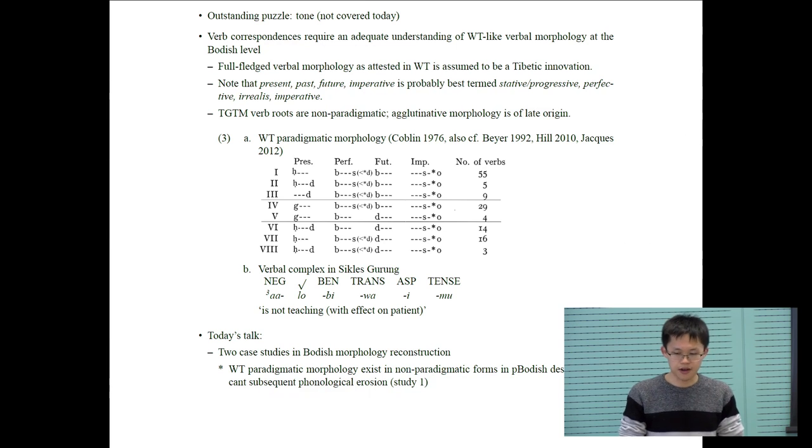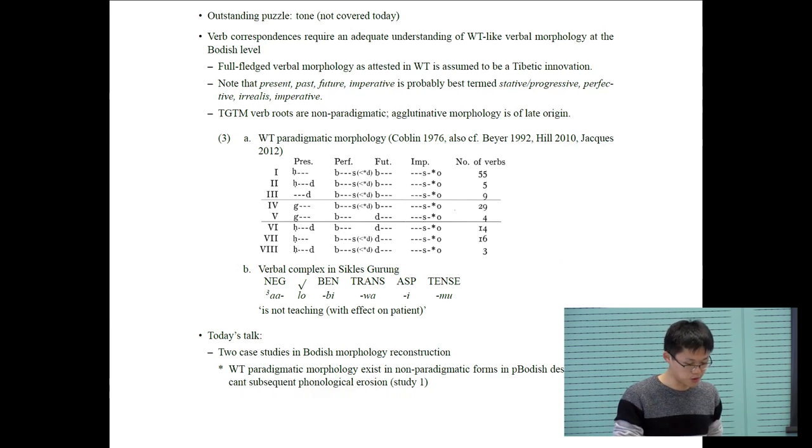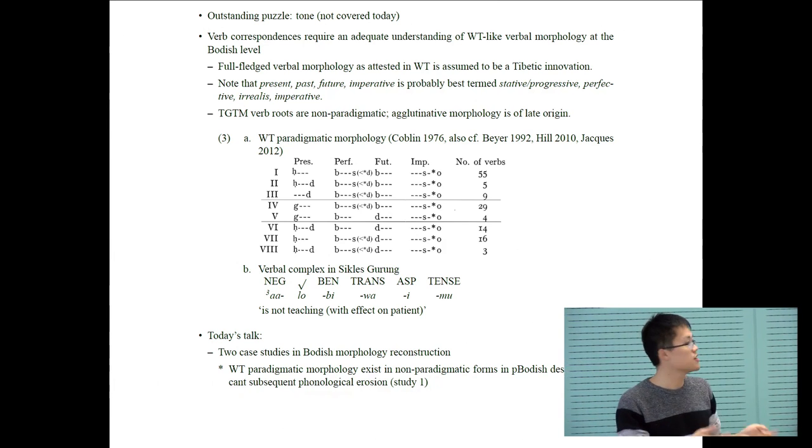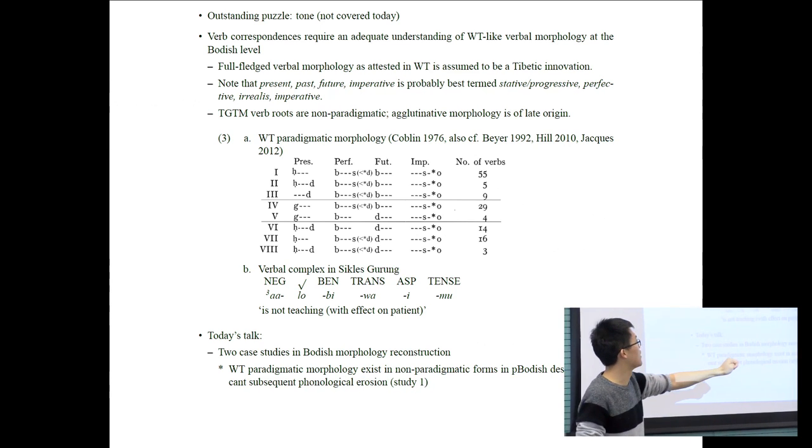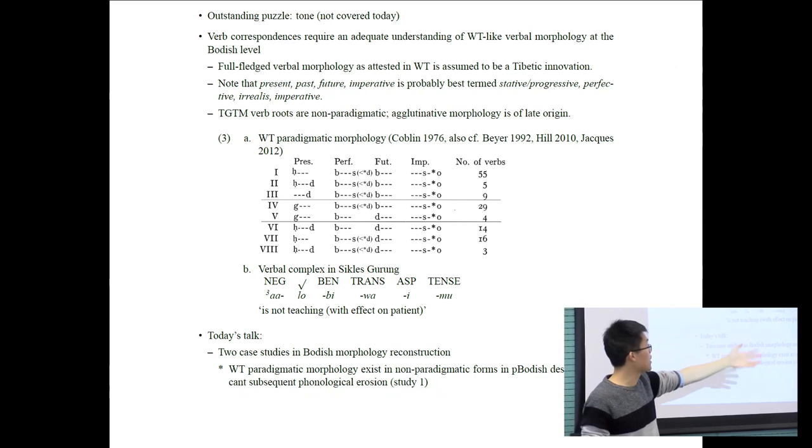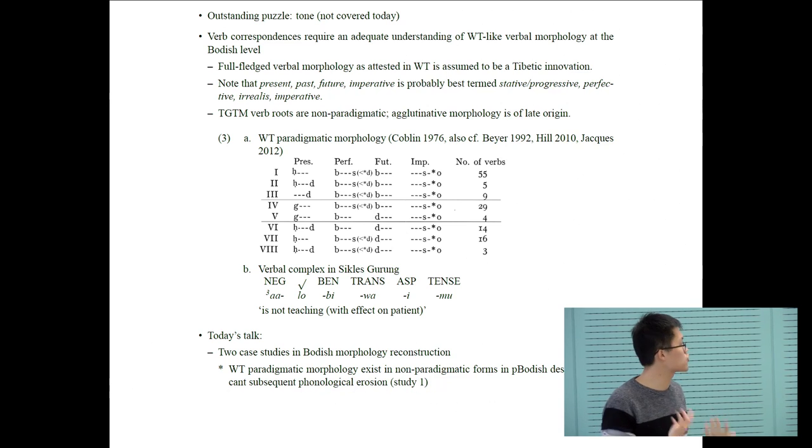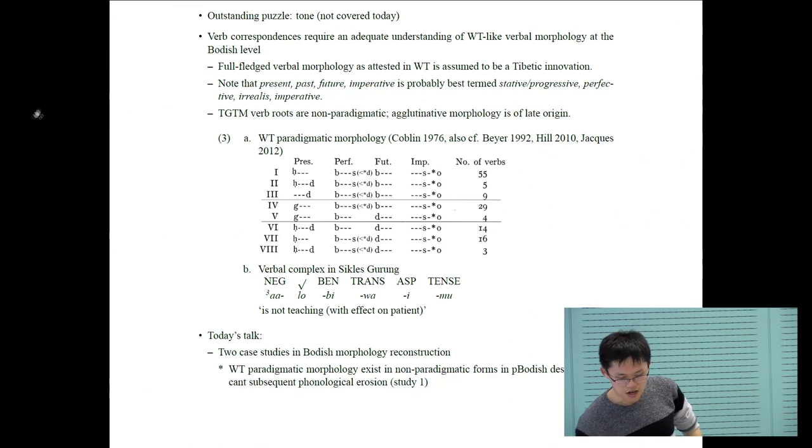Compare that with Tamangic verbs. Tamangic verb roots do not have this sort of paradigmatic morphology. For the greatest most part, they're invariable. The agglutinative morphology that we see in modern TGTM languages are very clearly of secondary origin. This gives us a puzzle of how much Tibetan verbal morphology there is in Proto-Bodish.